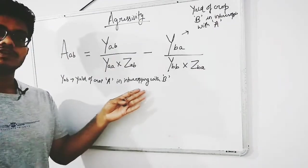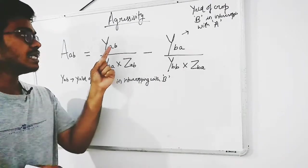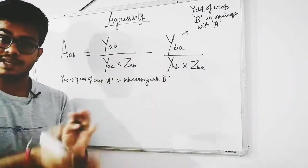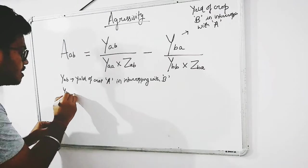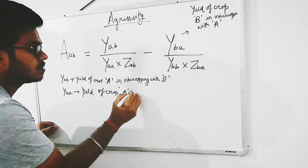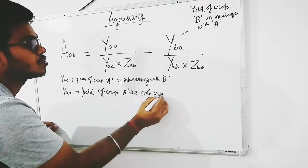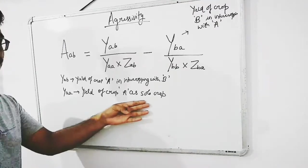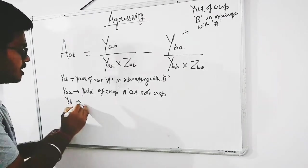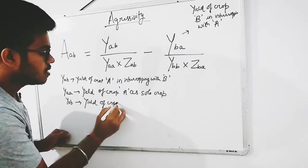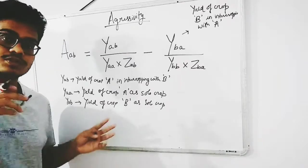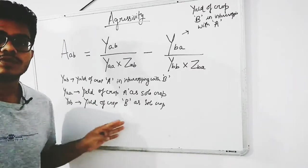So YAB is the yield of crop A when intercropped with crop B, and YBA is the yield of crop B when intercropped with crop A. YA is the yield of crop A when grown as a sole crop or monocrop. Similarly, YB is the yield of crop B when grown as a sole crop. When A and B are grown as solo crops, their yields are referred to as YA and YB.